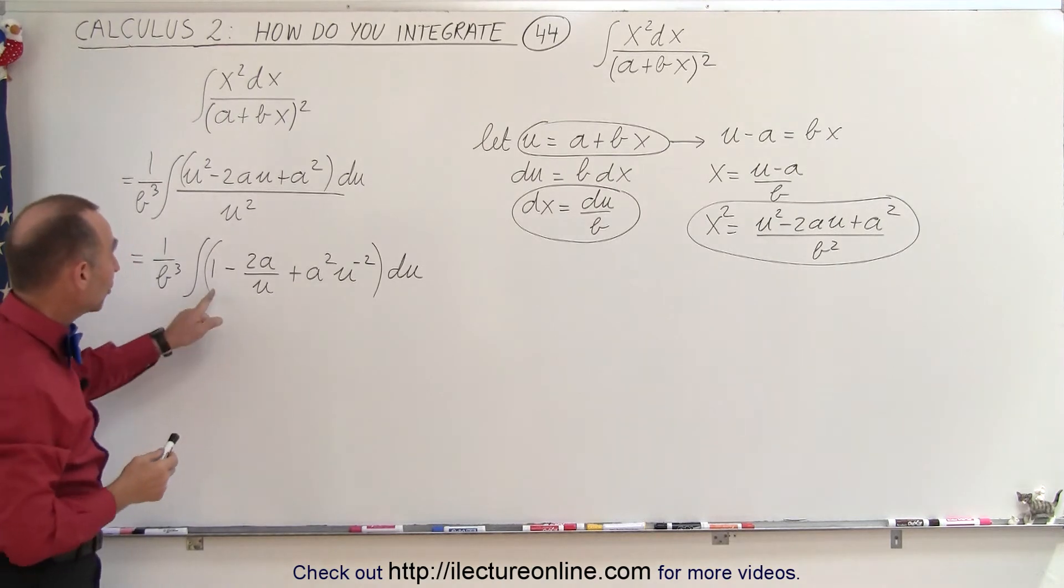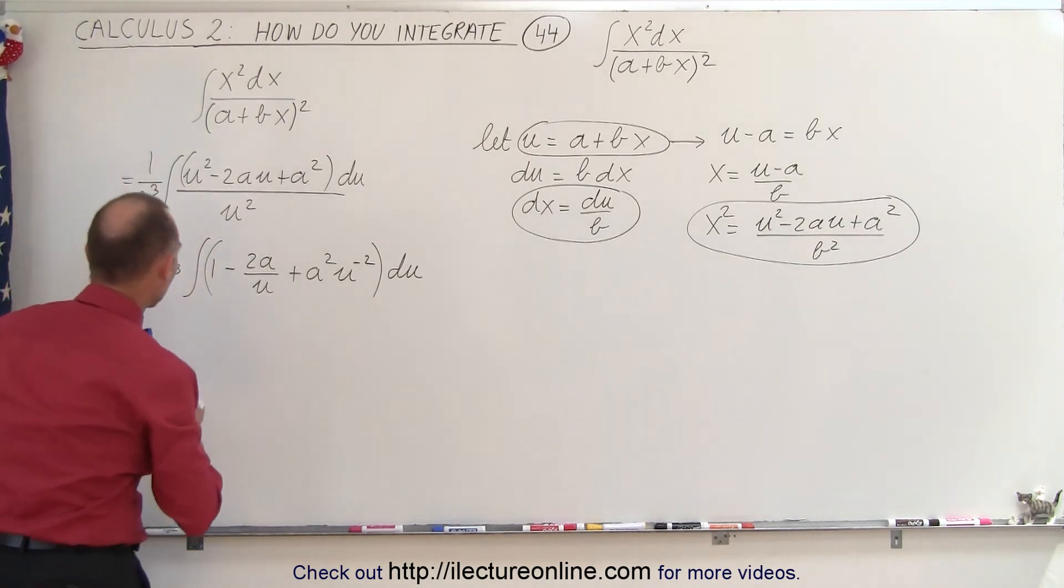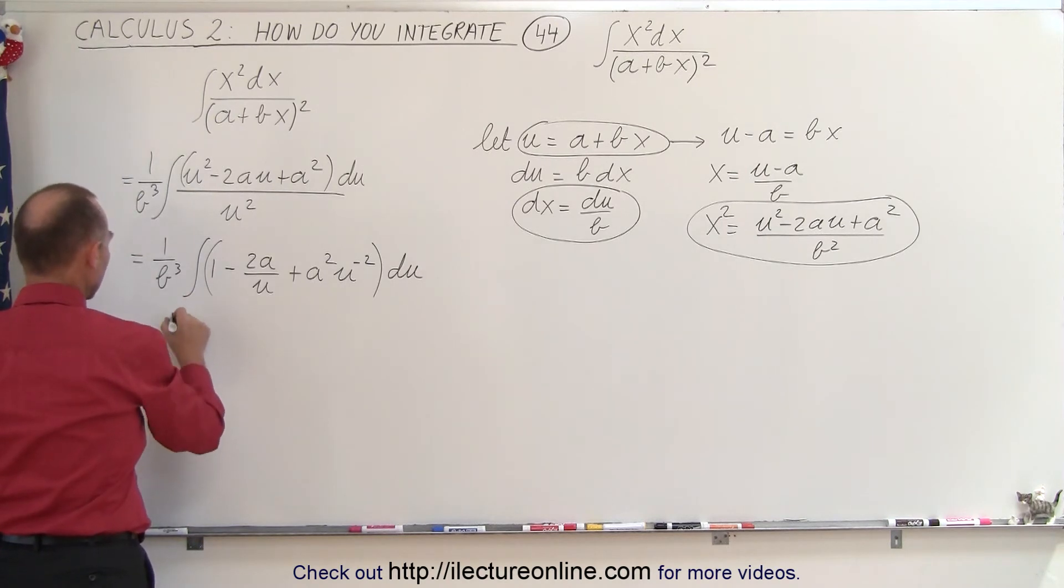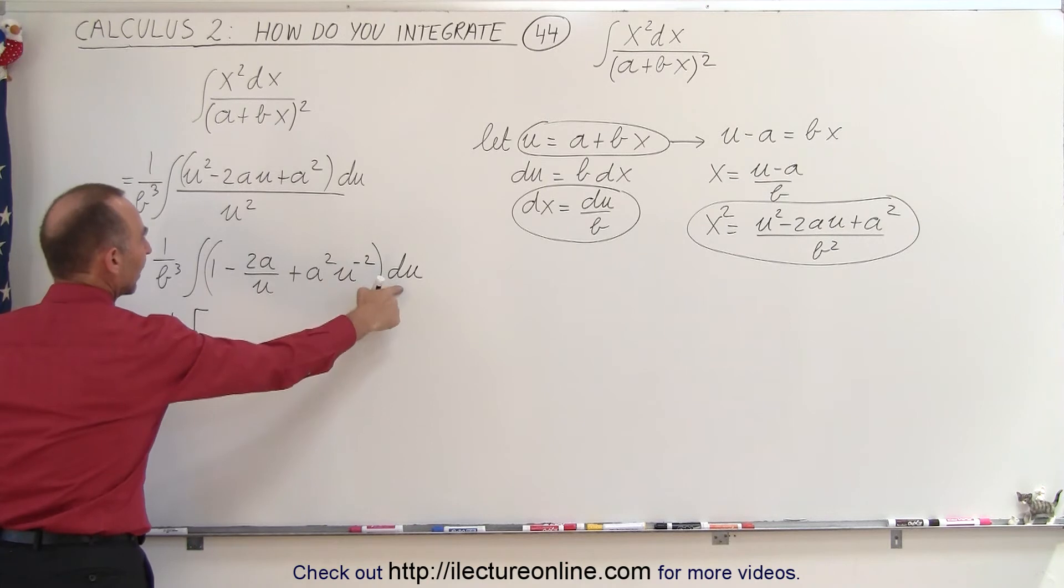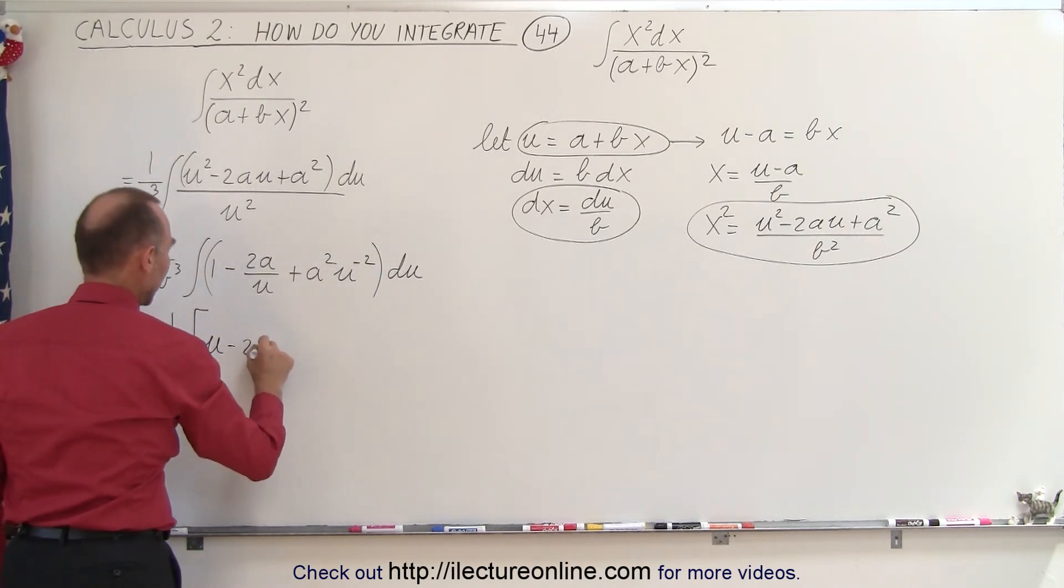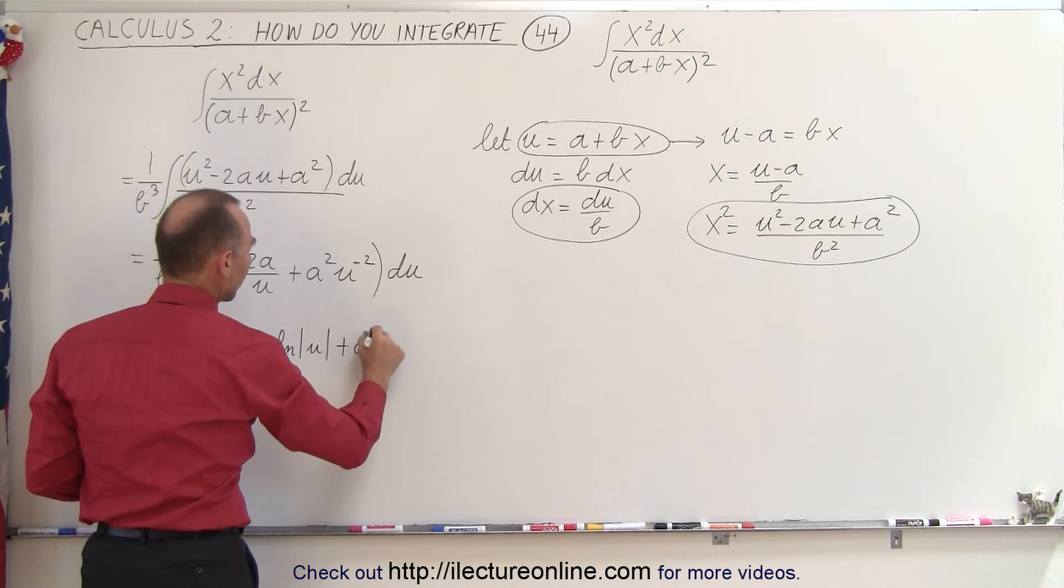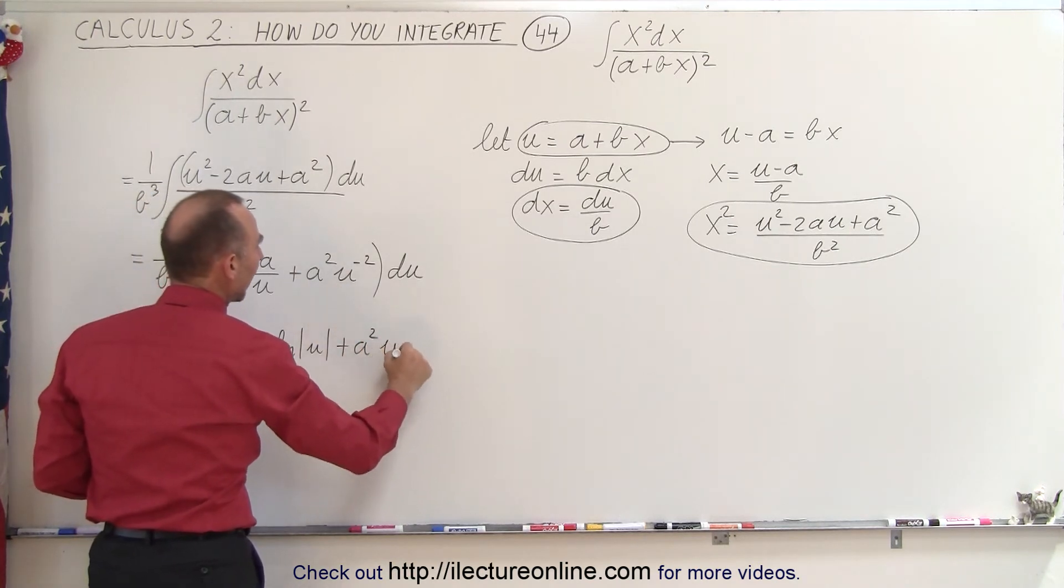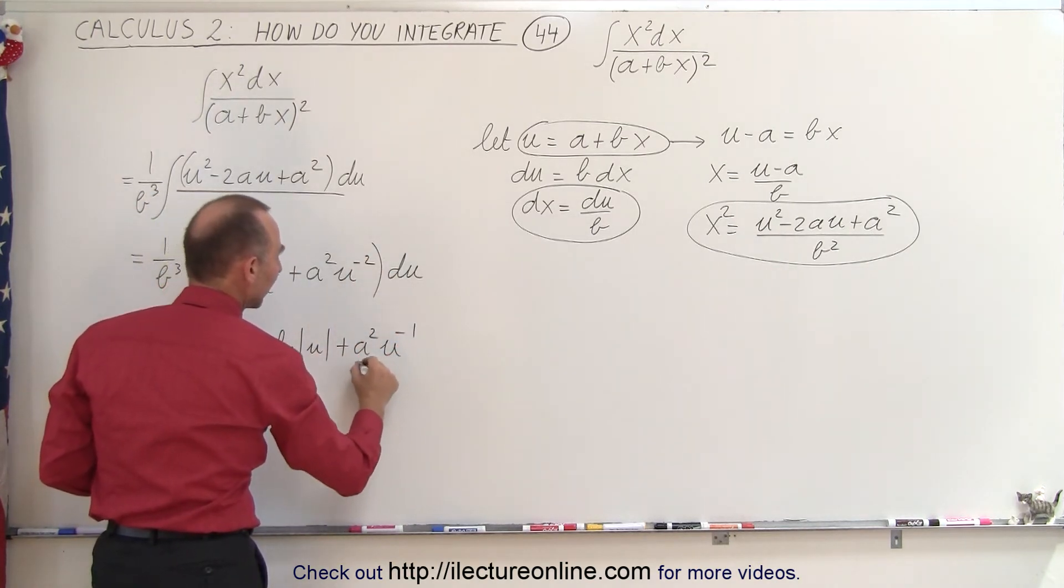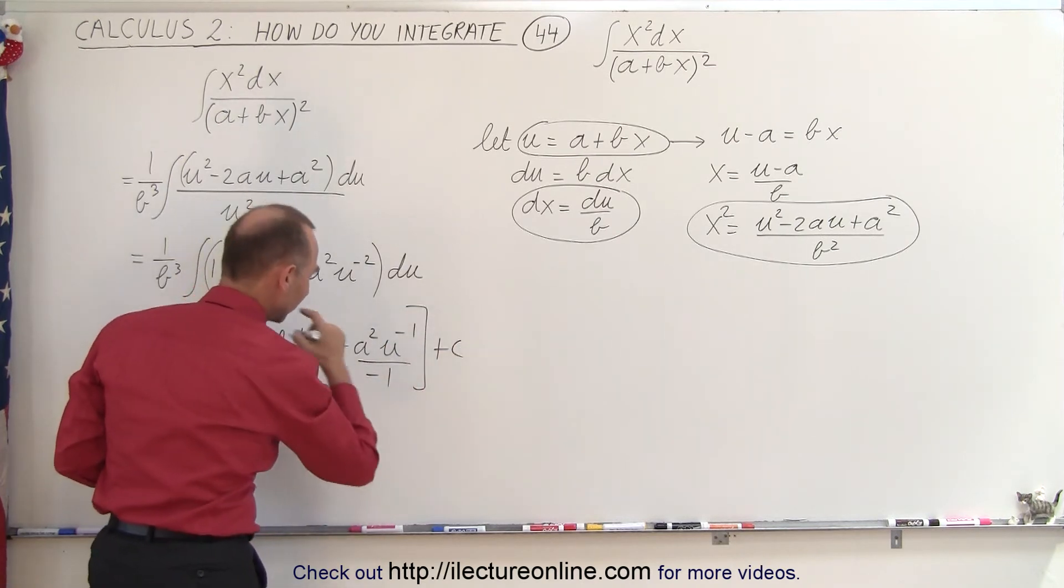And then you look at each of these three terms inside the integral, and you say, well, I can integrate those, and that will look as follows. This is 1 over b cubed times, 1 times du integrated becomes u, minus 2a times du over u, which is the natural log of u, and plus a squared times u. Add 1 to the exponent, minus 1, divided by the new exponent, minus 1, and we still have a constant of integration.